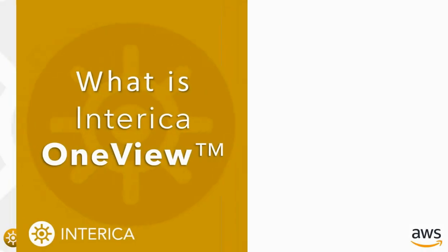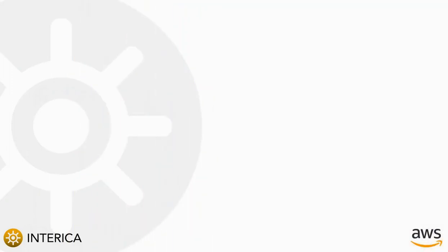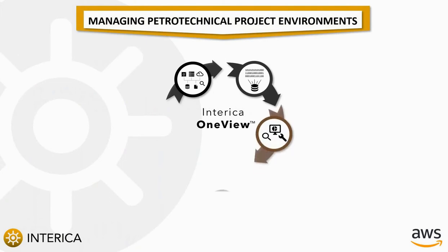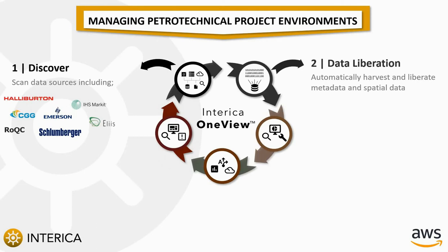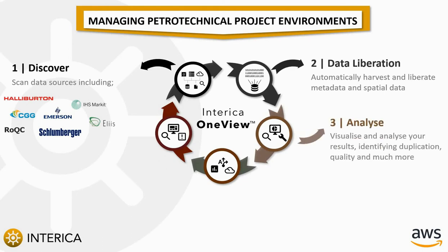Over the past two years we've been building our new technology platform, Interica OneView, from the ground up. Interica OneView has been designed to automatically discover and scan petrotechnical projects and data sets wherever they may be. We currently support in excess of 35 petrotechnical applications and data types. Once scanned, IOV is able to dynamically harvest and liberate metadata and spatial data from the application and store this in a normalized data model. Users can then access this model through the Interica OneView UI or through powerful open APIs to analyze their data sets.